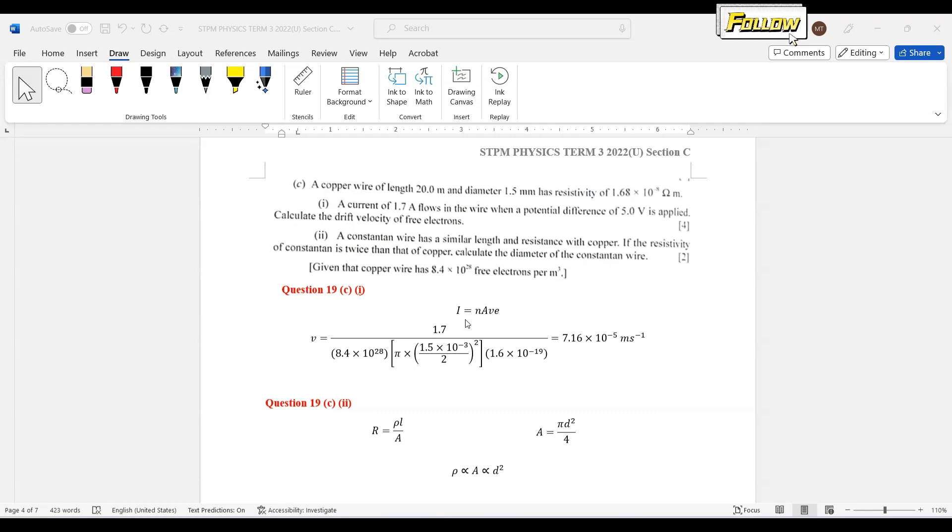For example, the current we have is 1.7 amperes. Electron density is given as 8.4 × 10²⁸ free electrons per meter cubed. And then for the area, we can just apply πd²/4. We have the diameter of the copper wire and then the electron charge.